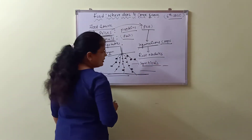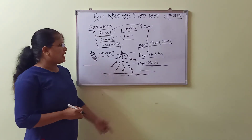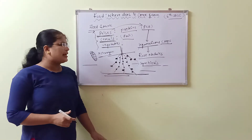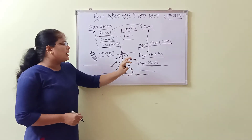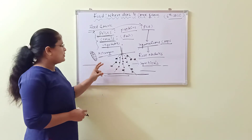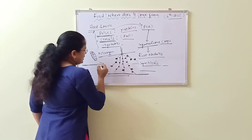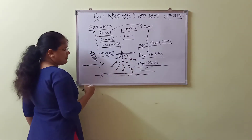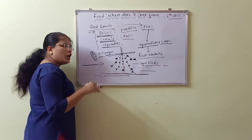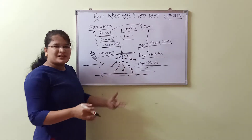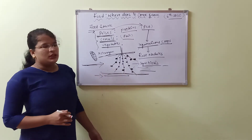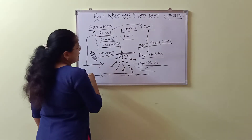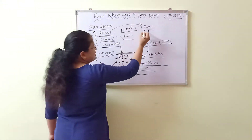You will understand symbiosis and nitrogen fixation more clearly in further classes. Leguminous crops take nitrogen from the soil and form nodules. If the crop is cultivated and the roots are left in the soil after harvesting, the nitrogen-enriched roots improve soil fertility. Such crops are known as pulses and are enriched with proteins. Examples include pea plants and groundnuts.